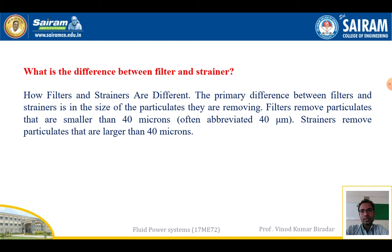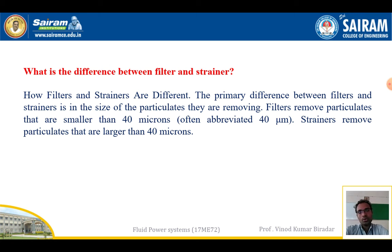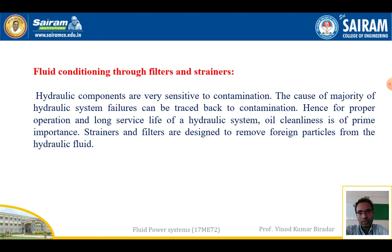The key difference between a filter and a strainer is the size of the particulates they remove. A filter removes particles smaller than 40 microns, whereas a strainer removes particulates larger than 40 microns. This is a very important distinction that may appear in competitive examinations like GATE. Remember: smaller than 40 microns belongs to filter, larger than 40 microns belongs to strainer.